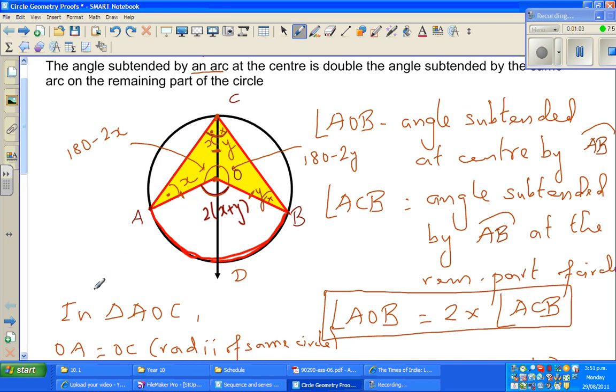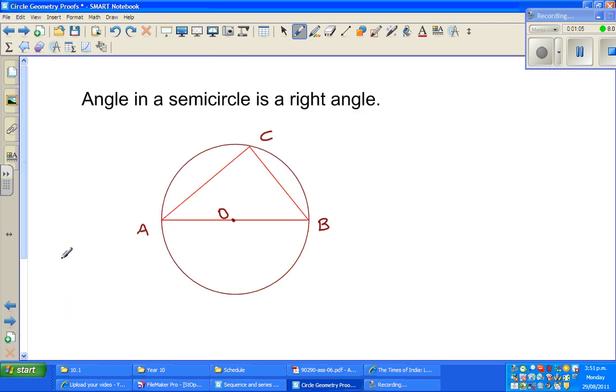I'm going to use this to prove the next theorem, which says that the angle in a semicircle is a right angle. It's pretty easy.